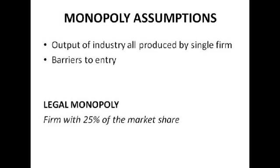Monopoly is basically when all the output of one industry is produced by a single firm. So say in the fishing market, if there was only one fisherman who got all the fish, he would have a monopoly.